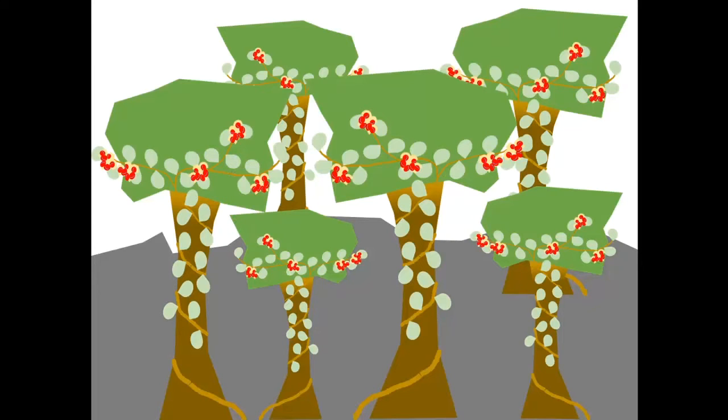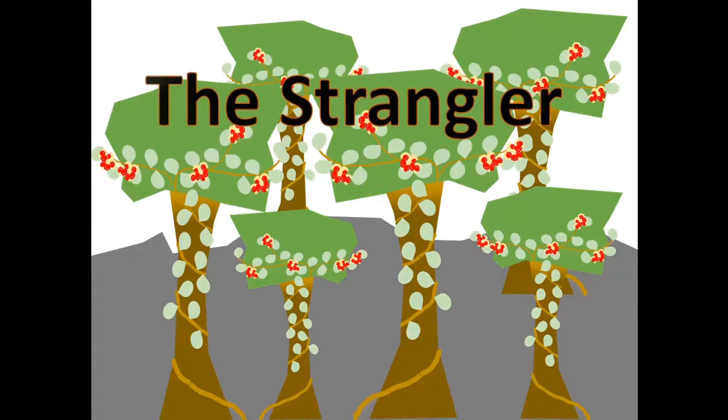Think these vines with their bright fruits look beautiful climbing up the trees? Think again. This strangler, also known as the oriental bittersweet vine, is capable of strangling trees or even causing them to fall over.